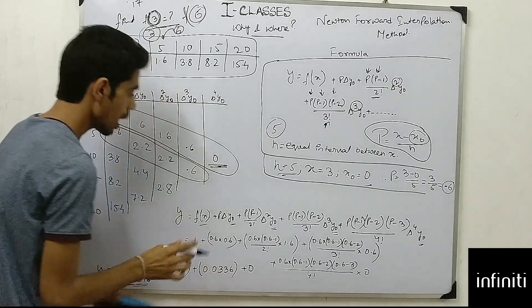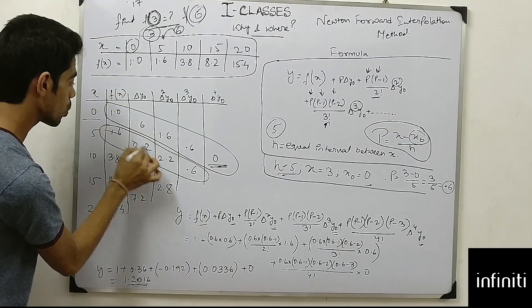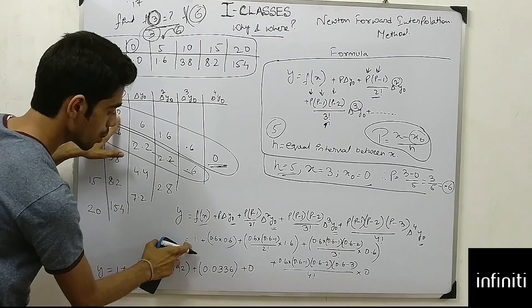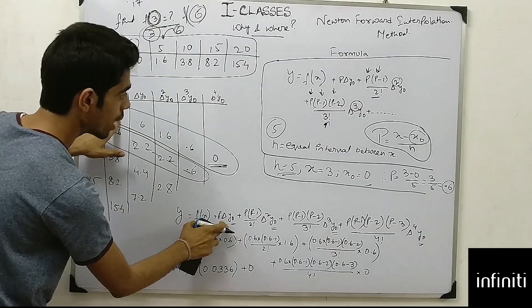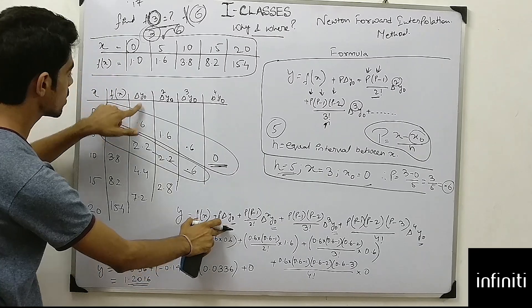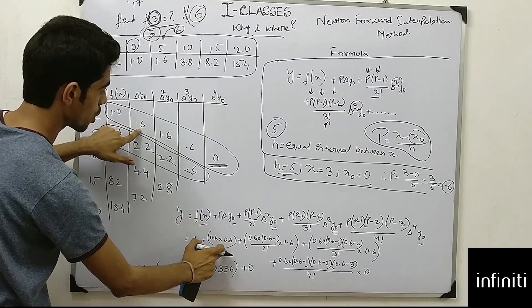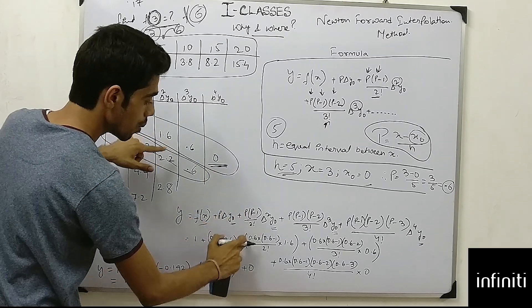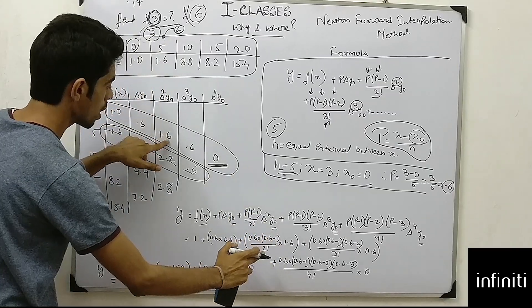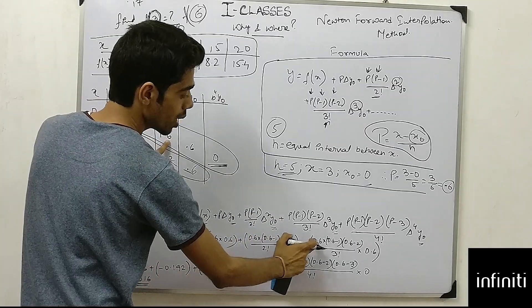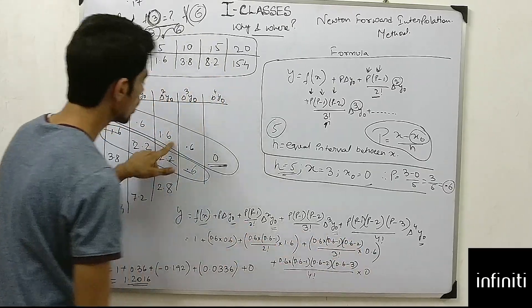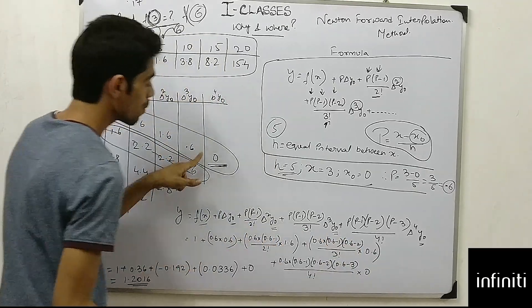Now applying the formula: fx = 1.0 (the value at x0 = 0). Then adding p·Δy0 and the subsequent terms. For the delta to the power 4 term, the value is 0, so that term drops out since multiplication by 0 gives 0.